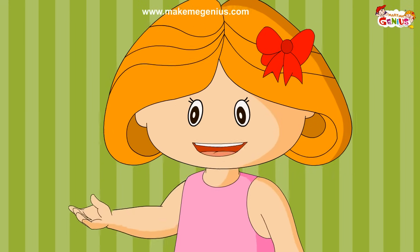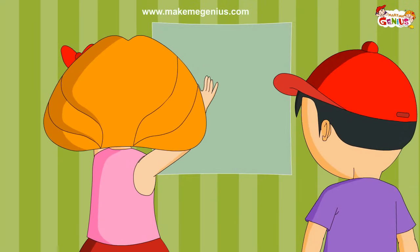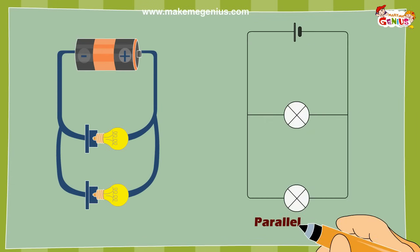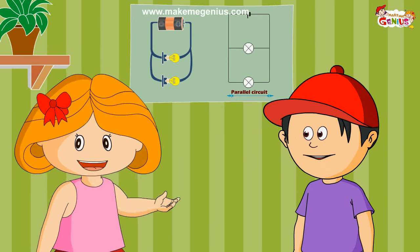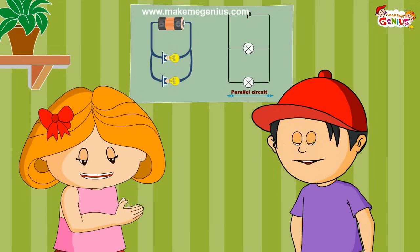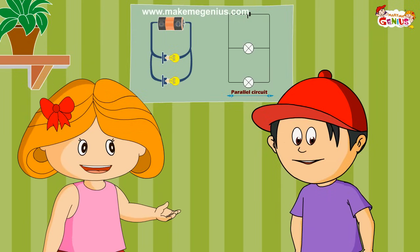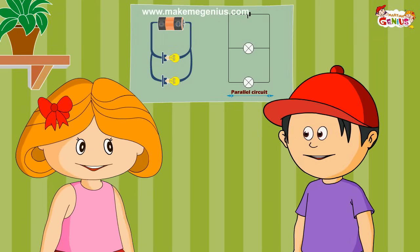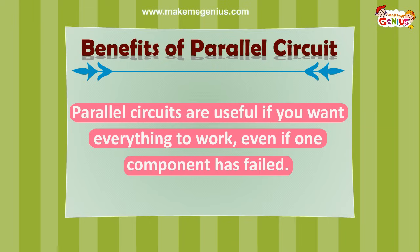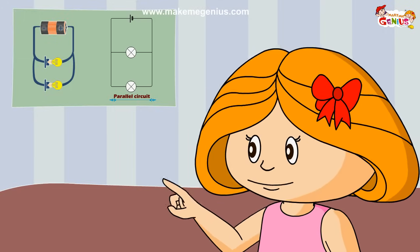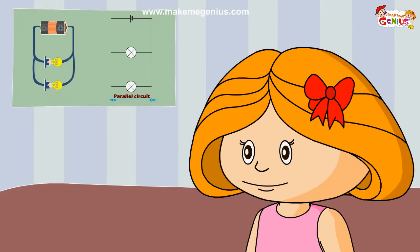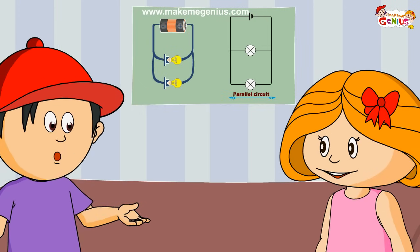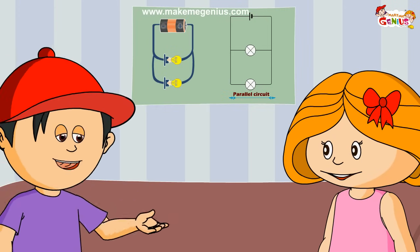Okay, now you have understood the parallel circuit. Can you draw it on the chart? Here it is — is it okay? Perfect. Let's clap for your work. Now can you tell me one benefit of parallel circuits? Parallel circuits are useful if you want everything to work even if one component has failed. This is why our homes are wired with parallel circuits. So even if one thing goes off, other things will continue to work.